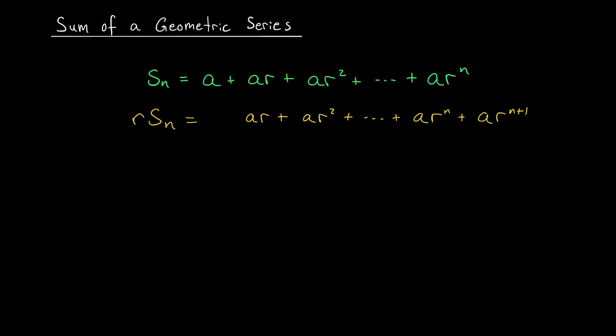Why would multiplying by r be helpful to us? Well notice that between line 1 and line 2, we have a lot of terms in common. Aside from this first term in line 1 and the last term in line 2, all the terms are repeated. So if we take the difference of these equations, most of the terms are going to cancel out. On the left, we're going to have 1 minus r times sn, and on the right, most of the terms die, and we're just left with a minus ar to the n plus 1.